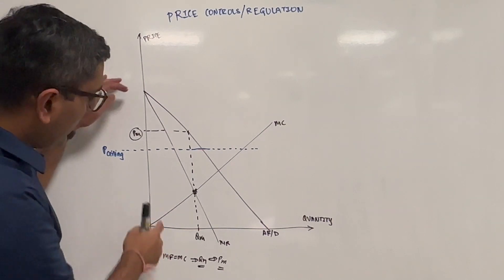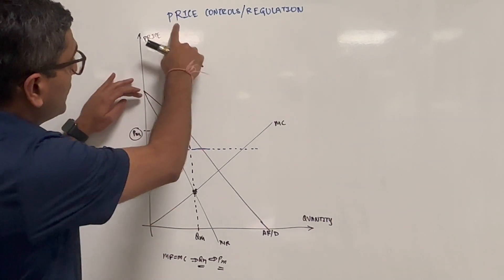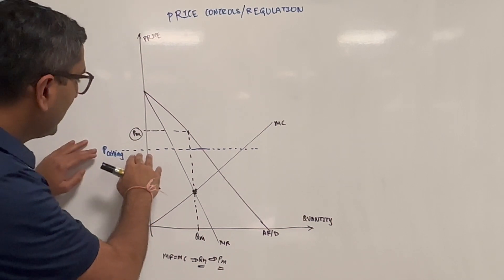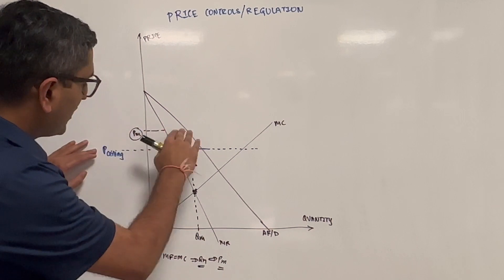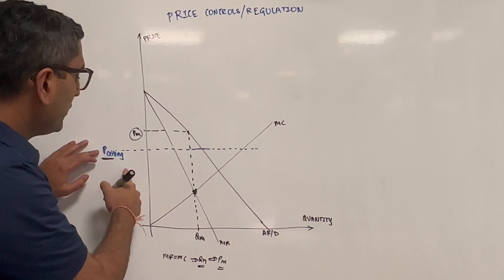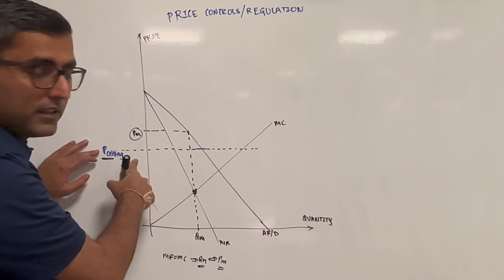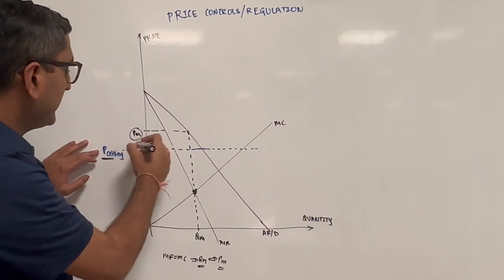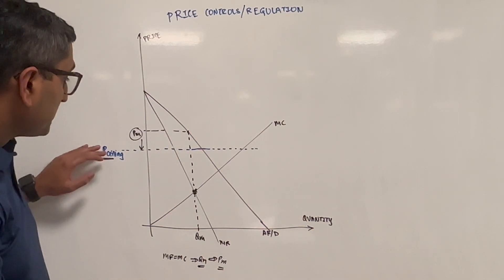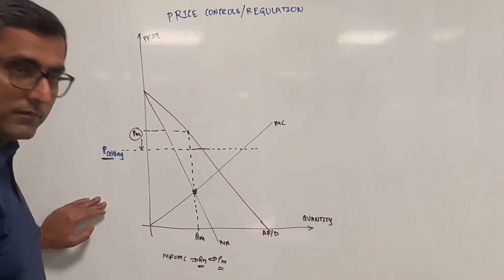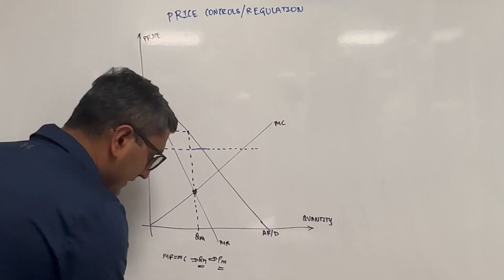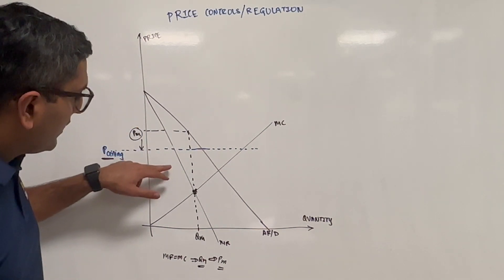Now imagine there is a price control — the government comes in and says: you have this price PM that you're charging, but I'm going to set a price ceiling for you, at which point you cannot charge anything above this price. It is a much lower price per unit at which you have to sell — at this ceiling or below it. So let's say the government comes in and puts in this price ceiling.